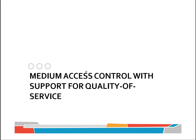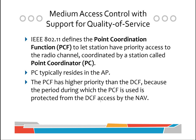802.11, which defines the rules for medium access control and has support for quality of service, defines two coordination functions. One of those is the Point Coordination Function or PCF. The PCF is different from the Distributed Coordination Function or DCF in that it lets stations have priority access to the radio channel. The coordination is done by the point coordinator or PC, which is a station residing in the access point or AP.